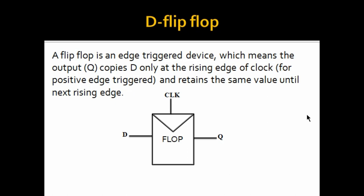So now let's see what is a D flip-flop. A flip-flop is an edge triggered device. It means that the output Q copies D only at the rising edge of the clock, and the output remains the same until the next rising edge. The output does not change between two rising edges — it only changes at the rising edge. This is for a positive edge triggered flip-flop; for a negative edge triggered flip-flop, the same happens at a falling edge.